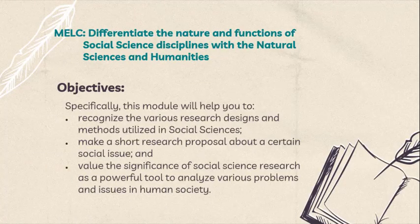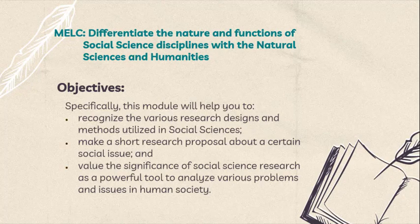The most essential learning competency for this lesson is for students to differentiate the nature and functions of social science disciplines with the natural sciences and humanities. Specifically, this module will help you recognize the various research designs and methods utilized in social sciences, make a short research proposal about a certain social issue, and value the significance of social science research as a powerful tool to analyze various problems and issues in human society.